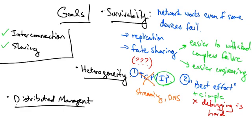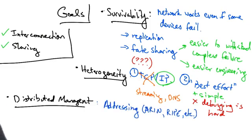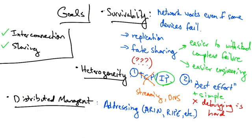Another goal of the internet was distributed management, and there are many examples where distributed management has played out. In addressing, we have routing registries. For example, in North America we have ARIN, or the American Registry for Internet Numbers. And in Europe, that same organization is called RIPE.